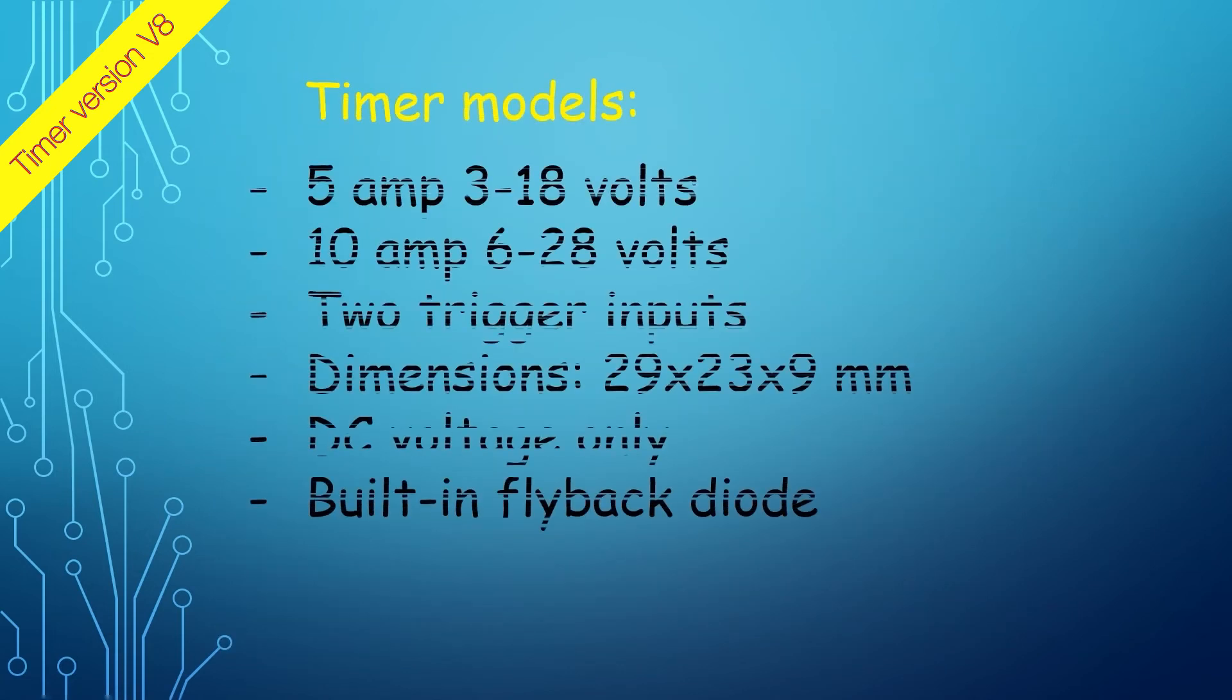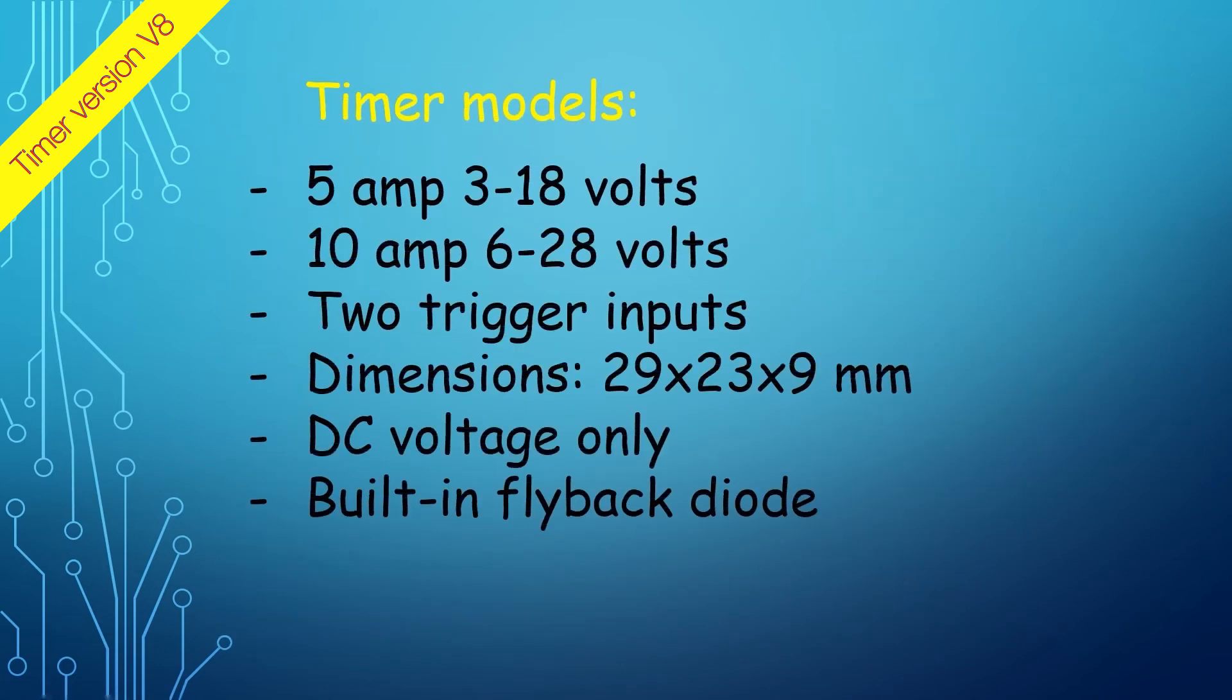There are two timer models. One is rated up to 5 amps with 3 to 18 input volts range, and the other is capable of 10 amps and 6 to 28 volts range.